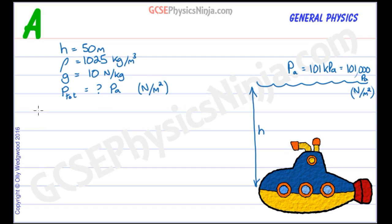What equation will link these together? Well, the pressure at a depth H in liquid is given by rho times G times H. So now let's put the numbers in. 1025 multiplied by 10 multiplied by 50 meters, and that's going to give us 512,500 pascals.